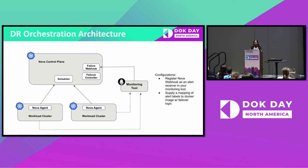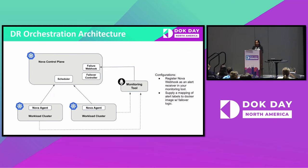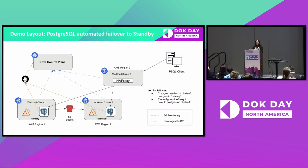The DR orchestration architecture consists of: the Nova control plane as the central scheduler, spreading workloads identically onto both clusters; a failure webhook that integrates with your monitoring tools and is registered as an alert receiver; and a failover controller that runs a job you provide as a Docker image, encapsulating your runbook steps. You can do whatever you want in that script. The three steps are: define your schedule policy, register the Nova webhook with your monitoring tool, and define the failover job.